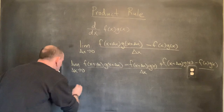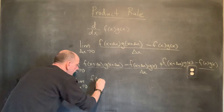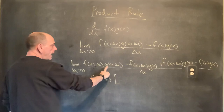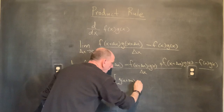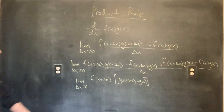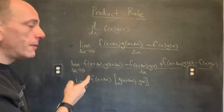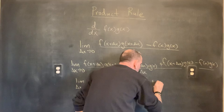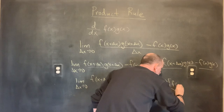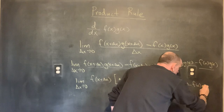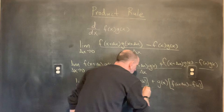Looking at this, there's a common factor of f(x + Δx) that I can pull out. So, limit as delta x goes to zero, I pull that f(x + Δx) out and I've got g(x + Δx) minus g(x). Then, it looks like I have a common factor of g(x) in the second piece, so let's pull that g(x) out. I have g(x) times f(x + Δx) minus f(x), all over delta x.